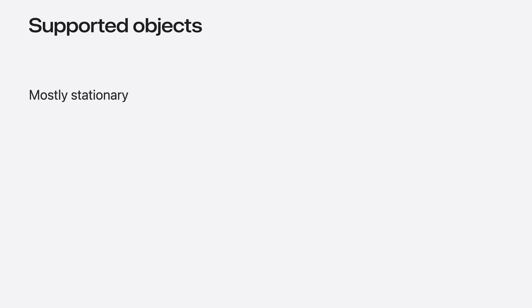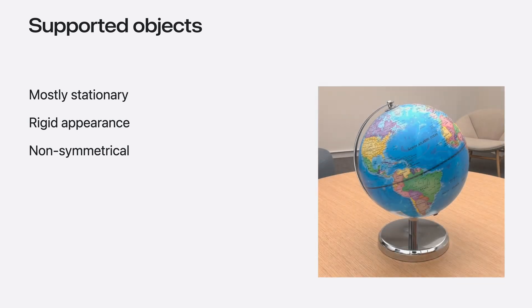Object tracking works best for objects that are mostly stationary in the surrounding. Also aim for objects that have a rigid appearance in both shape and texture. Lastly, your objects should be non-symmetrical, meaning they have a distinct appearance from all views. My globe works great because it has a non-symmetrical texture on top of its spherical shape. For capturing the globe, I removed the stand to ensure only the rigid part of the object is considered for setting up the tracking.